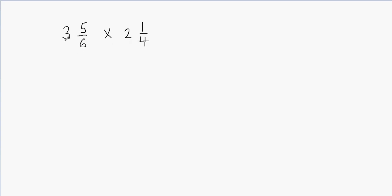First of all I'm going to multiply my whole part with the fraction's denominator. So 3 times 6 gives me 18, and 18 plus 5 is going to give me 23. So I'm going to write 23 here, and then we don't change the denominator, so it's going to be 6.